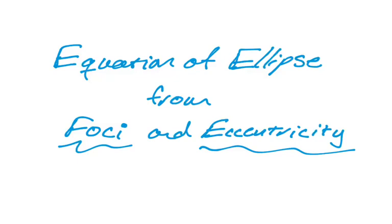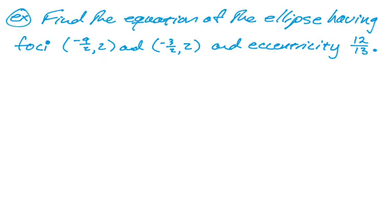In this video we are going to find the equation of an ellipse from its foci and also its eccentricity. So that's the given information. Let's look at the problem. We want to find the equation of the ellipse having foci negative 9 halves 2 and negative 3 halves 2, and an eccentricity of 12 over 13. So it's an ellipse, so the eccentricity has to be less than 1. Not really relevant because it's given, but an important point.